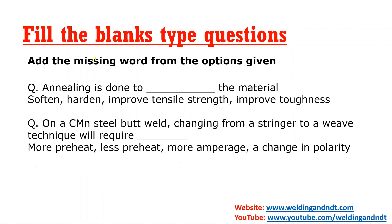The third format is fill in the blanks — add the missing word. One statement with a blank is given and you choose the correct word. For example: 'Annealing is done to __ the material' — options: soften, harden, improve tensile strength, improve toughness. Another example: 'On a carbon steel weld, changing from a stringer to weave technique will require: more preheat, less preheat, more ampere, or a change in polarity.' You choose the correct answer to fill the blank.